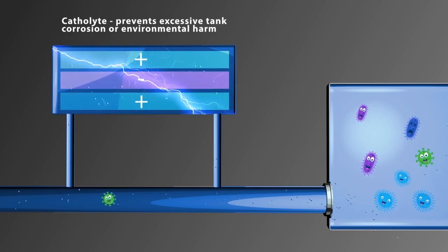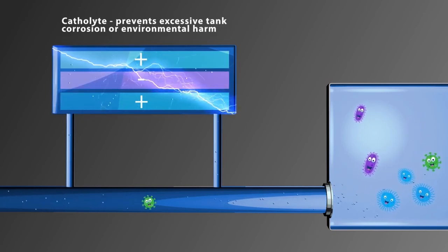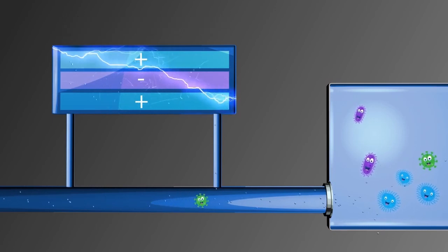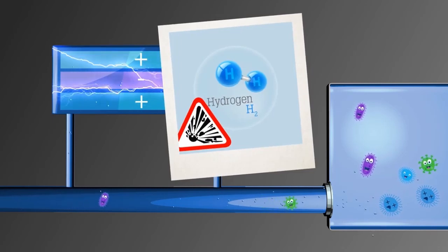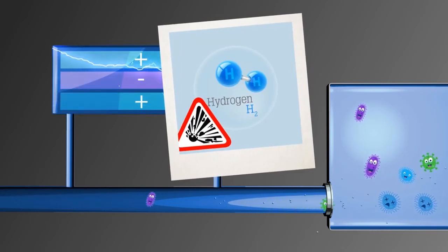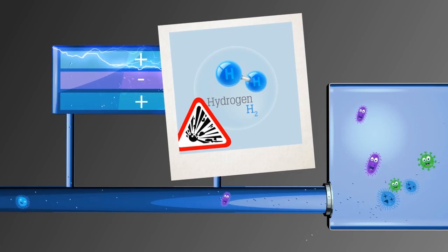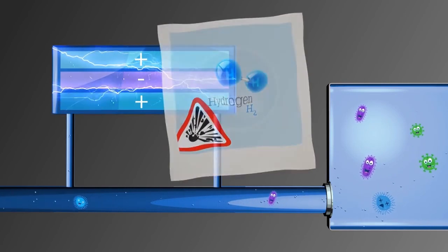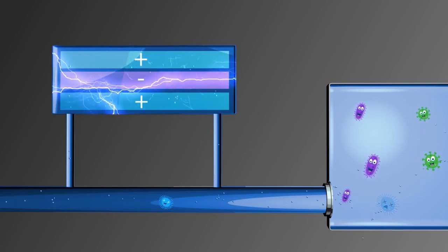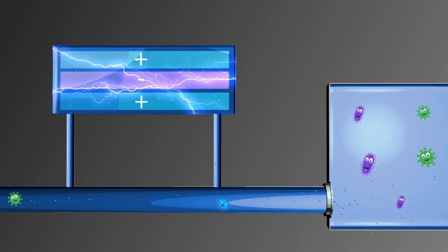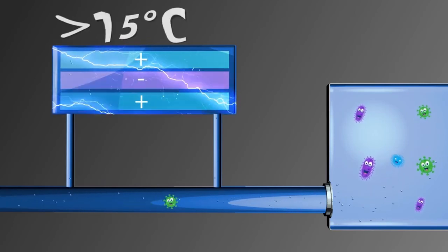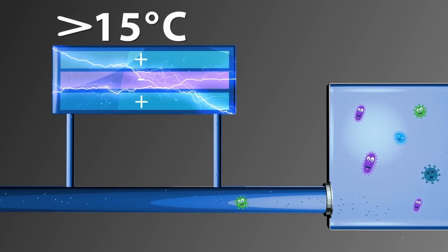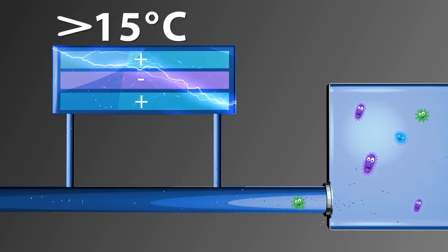Besides anolyte and catholyte, electrolysis can produce hydrogen gas which must be handled on board the ship. The amount of active substance generated is dependent on the salinity level of the water. The oxidation reaction of seawater is also temperature dependent. The reaction does not create the disinfectant at effective levels below approximately 15 degrees Celsius. The water must be heated, hence the higher energy consumption.